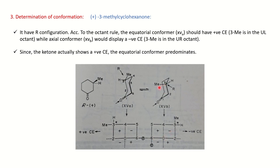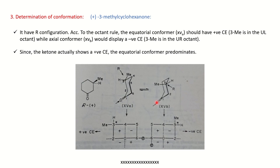Why does the equatorial position give a positive Cotton Effect? Using the Octant Rule diagram, you can see that the methyl group in the equatorial position falls in the upper-left section, which carries a positive sign — so the equatorial isomer gives a positive Cotton Effect. When the methyl is in the axial position, it falls in the upper-right section, which carries a negative sign, giving a negative Cotton Effect. So if the ketone shows a positive Cotton Effect, you can say the molecule exists in the equatorial conformation.